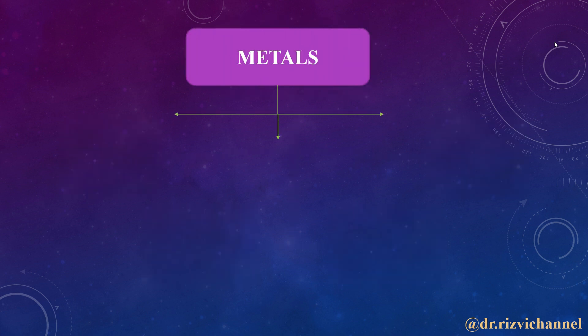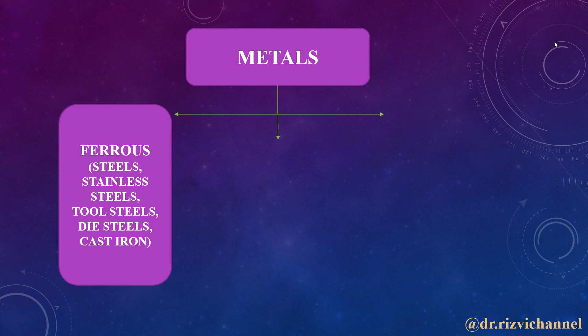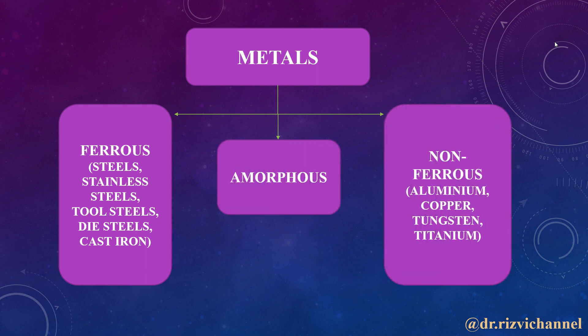Talking about metals, they can be ferrous, non-ferrous, and amorphous. Ferrous metals are those that include iron, while non-ferrous metals do not include iron. Ferrous metals may incorporate steels — stainless steels, tool steels, die steels — and cast iron. Non-ferrous comprises aluminum, copper, tungsten, and titanium.